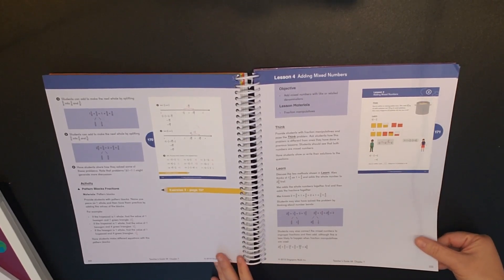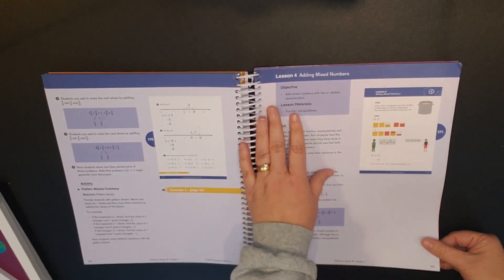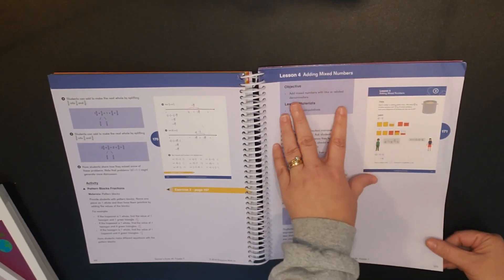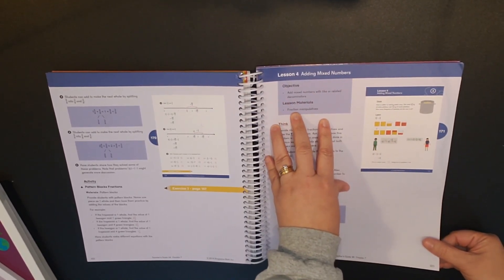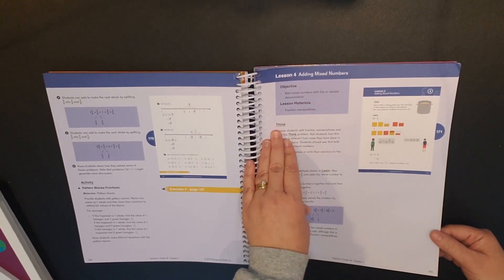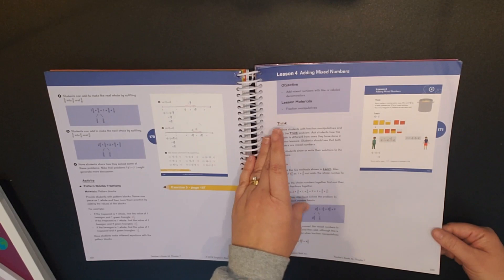So as an example, let's walk through lesson 4. So this is still chapter 7, lesson 4 and it's adding mixed numbers. So you have your objective and then your lesson materials which would be fraction manipulatives. Throughout Singapore Dimensions.